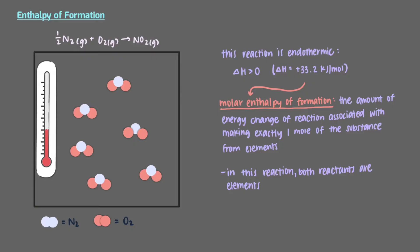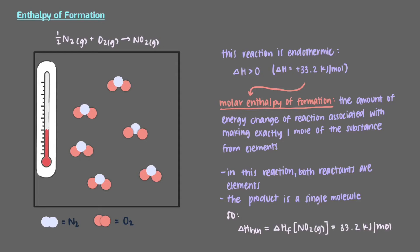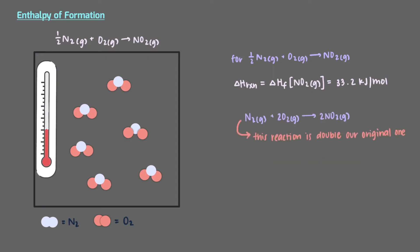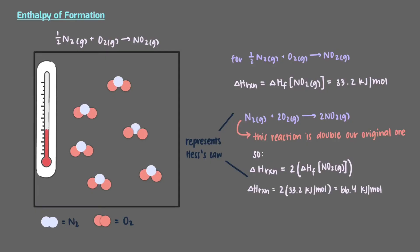Since both of the reactants are elements — nitrogen and oxygen — and the product is a single nitrogen dioxide, the delta H for this reaction is the delta H of formation of nitrogen dioxide. When you double the reactants and products, the delta H for the reaction is doubled as well — this is Hess's law. That means the delta H for this reaction is 2 times the delta H of formation of nitrogen dioxide, which is 66.4 kJ per mole.